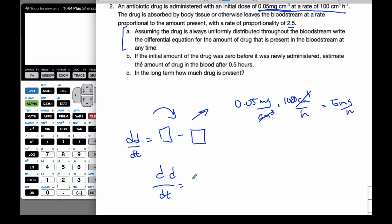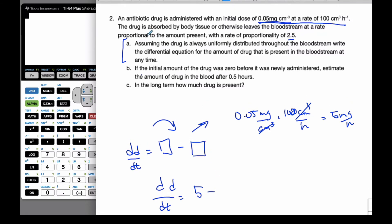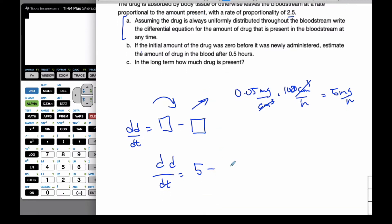dD/dt going in is 5. Going out, though, is going to be subtracted. The drug observed leaves the bloodstream at a rate proportional to the amount present. So however much D is left proportional to it, it's going to leave with the constant proportionality of 2.5. And so this here, 5 minus 2.5D, is my differential equation that discusses how much of the drug is in the bloodstream. This is how much is going in, and this is the rate going out. And so this is the total rate altogether.